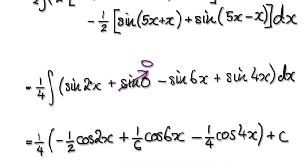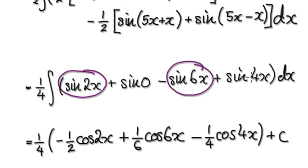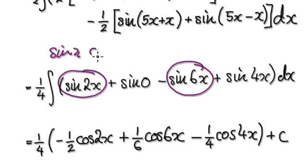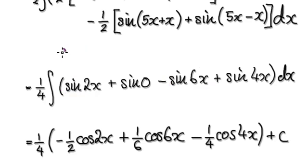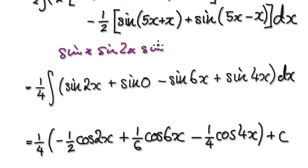Now integrate. This is easy to integrate because these are all sums. Earlier we had products of sine x, sine 2x, and sine 3x multiplying each other, but now we've broken everything up into individual sine terms — sums — which are straightforward to integrate.